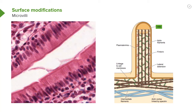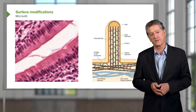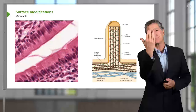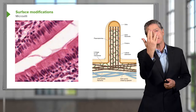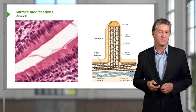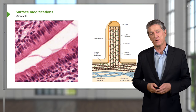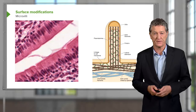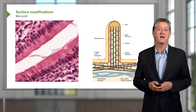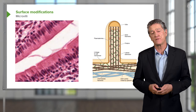Myosin also joins the actin filaments to the plasma membrane. Along the terminal web there are myosin II fibres, which are contractile. By contracting, they fan out the microvilli like fingers spreading apart, increasing the distance between microvilli and therefore exposing greater surface for absorption. These structures are specialised for very efficient absorption of water, increasing the surface area for that transport.